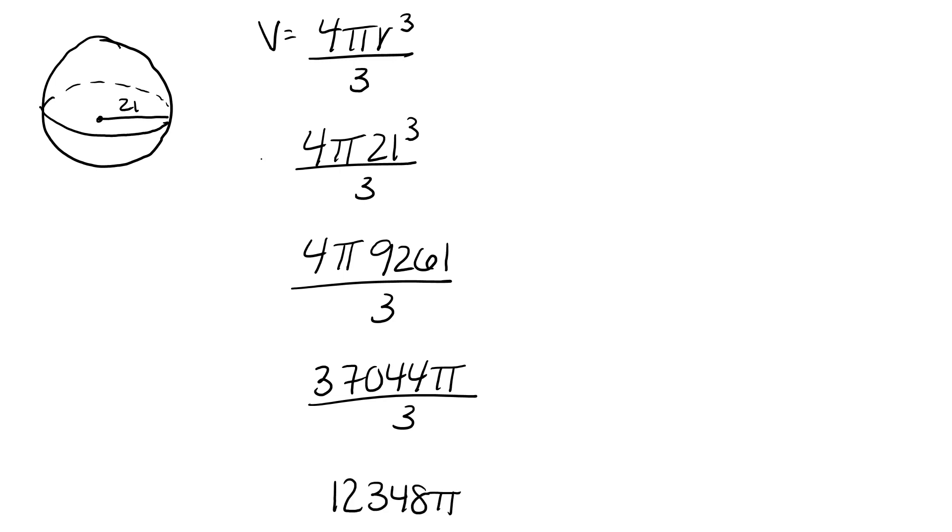And then we multiply by pi. Using the directions, it tells us 22 over 7, which gives us 38808. There's no decimals, so there's no rounding. Thank you.